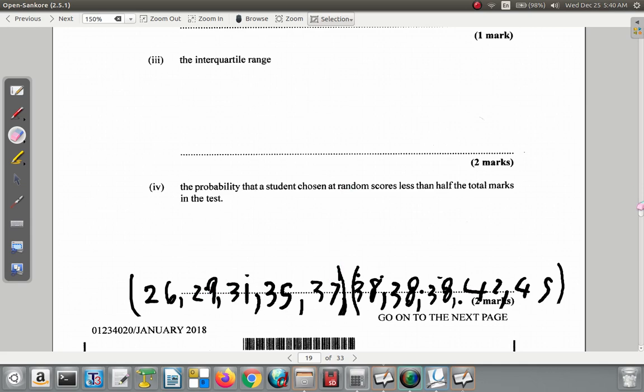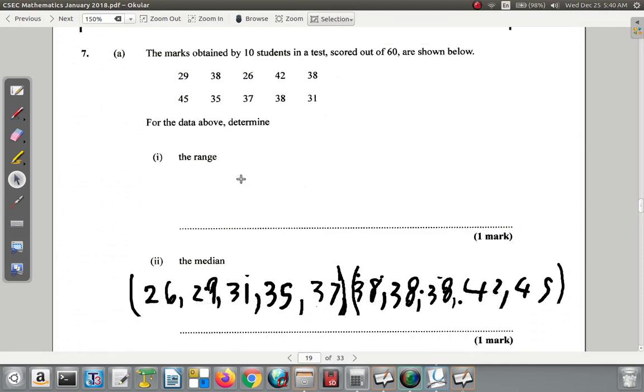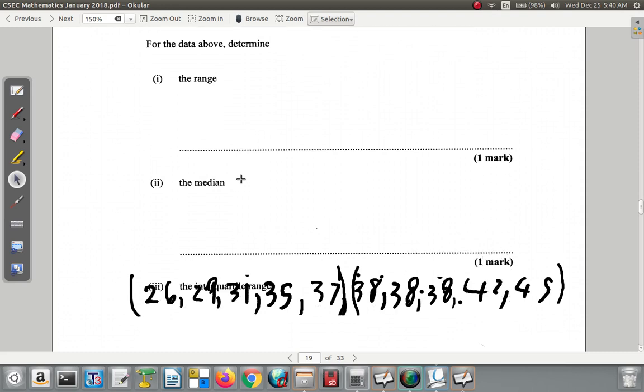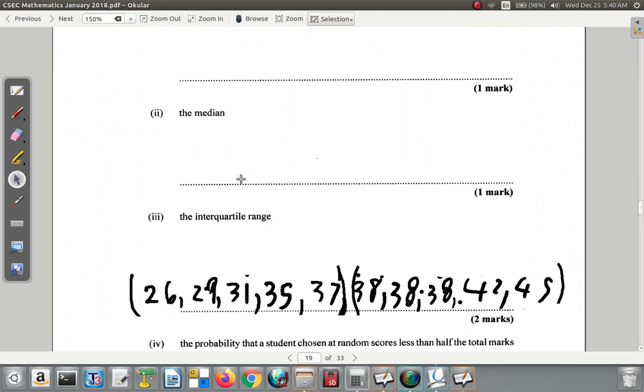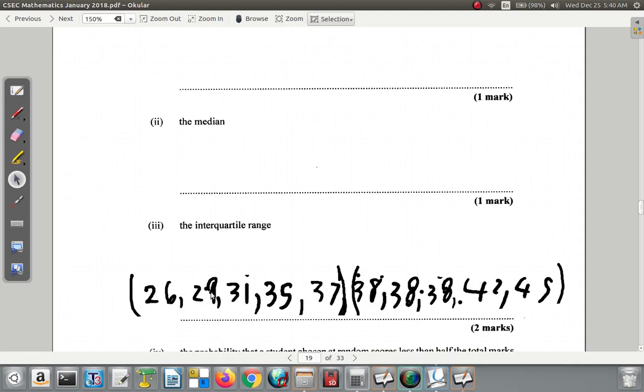How many students are there again? Total number of students was 10. 10 of them. So you have 1, 2, 3, 4, 5, 6, 7, 8, 9, 10 students.